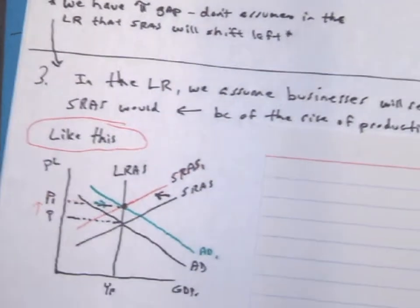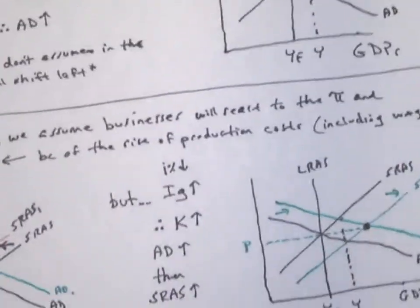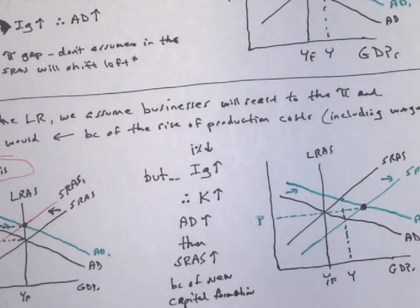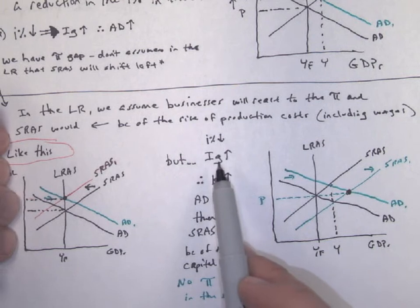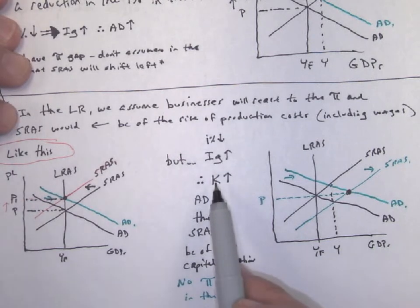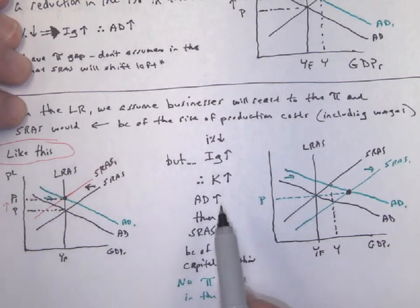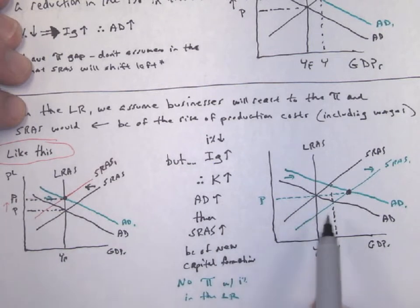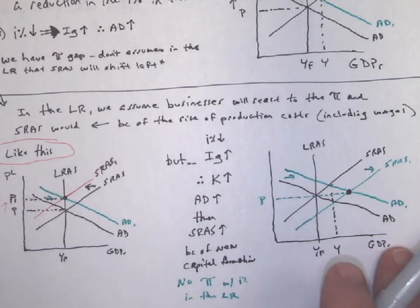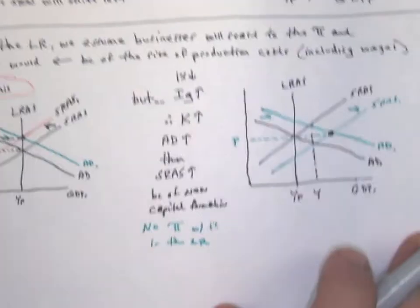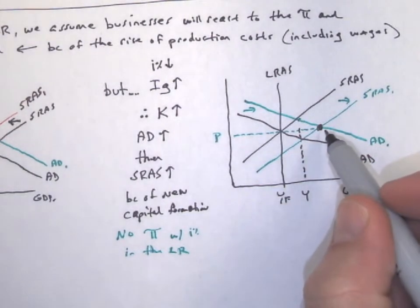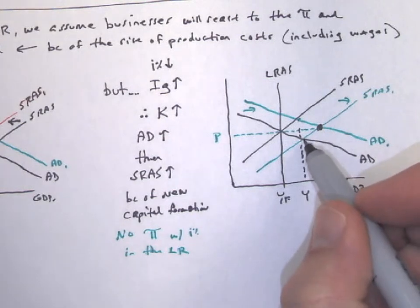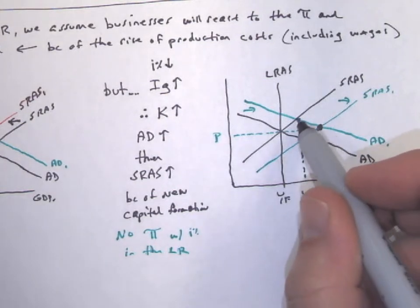However, what we're going to look at today is another version of it. If we have investment, and that means we have a low interest rate and investment increases, capital formation is going to increase. So let's go through our steps again. Aggregate demand is going to increase, and it's going to shift to the right, and it's going to put us into short run equilibrium. So we're in short run equilibrium at our new aggregate demand, and that would be at our first shift right there.